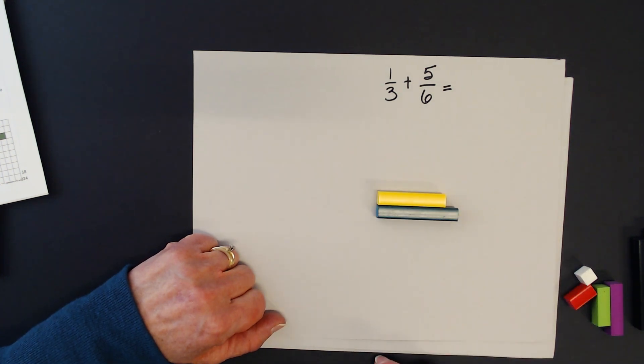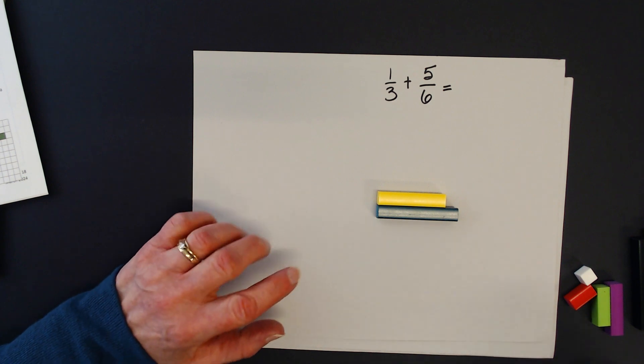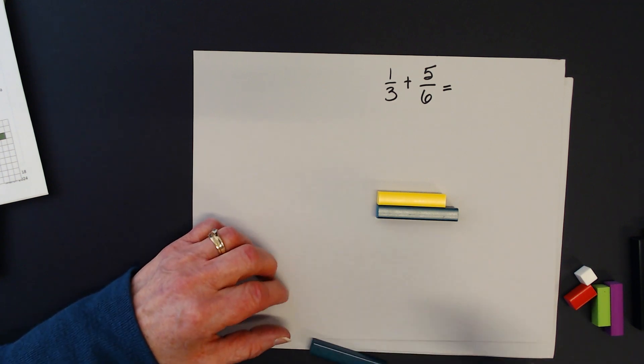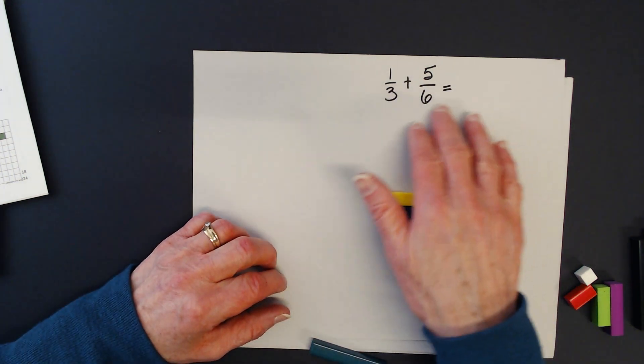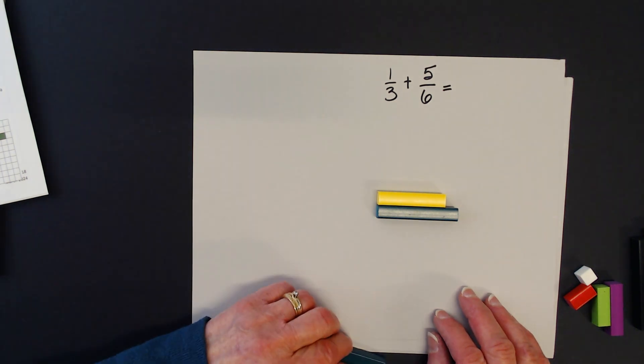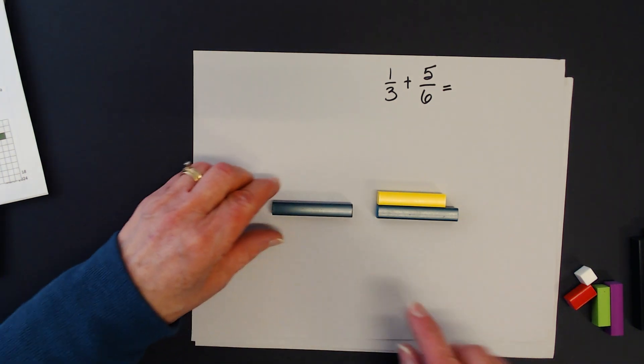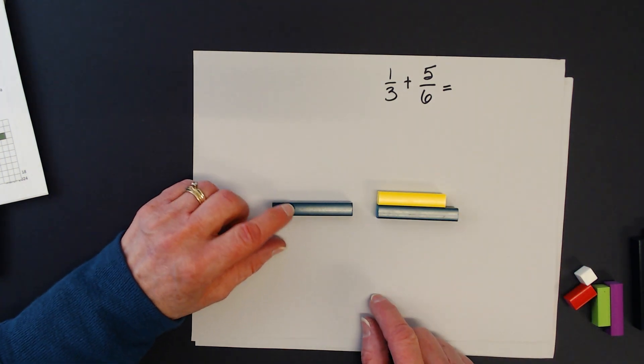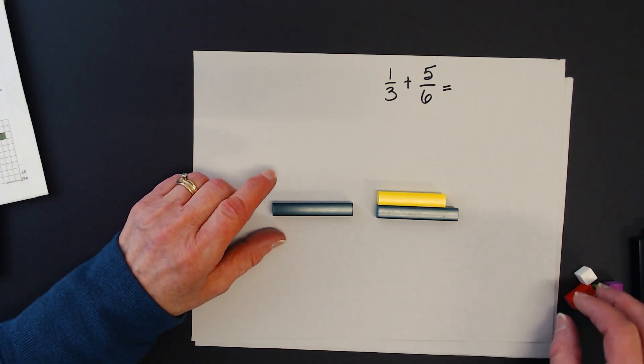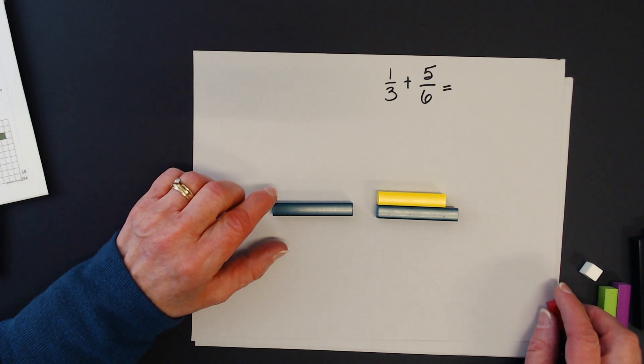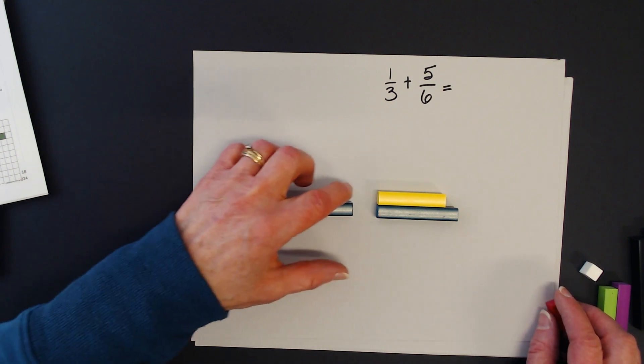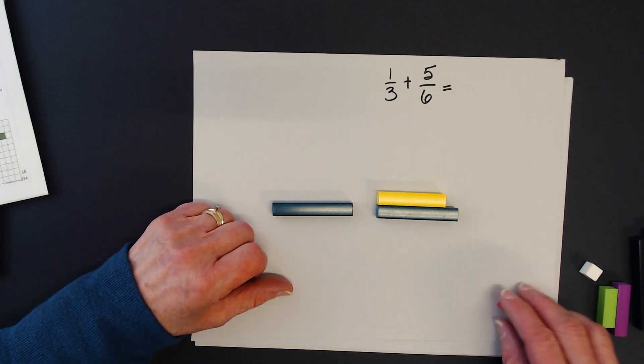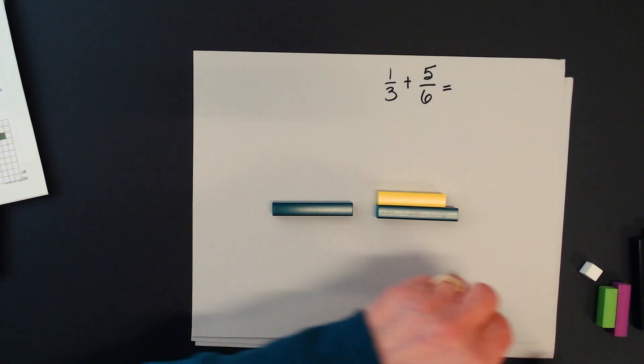Now, I want to represent 1/3. But we need the same denominator when we are adding. So I'm going to take the same green rod that is sixths. And what I'm going to do is I'm going to think which rods could we use where I could put three on here in order to represent thirds.